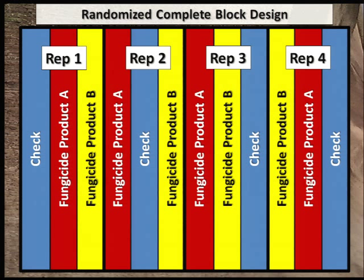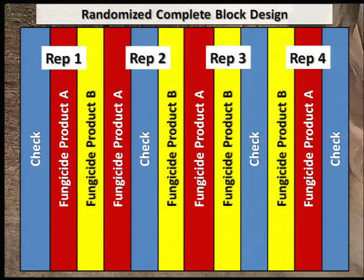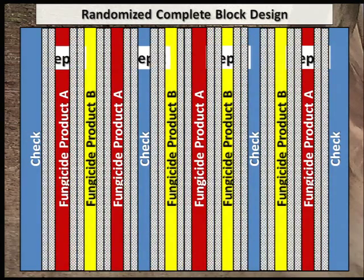Therefore, in variable fields, blocks may not be adjacent, as shown here. The width for each comparison strip depends on your equipment widths. The length of each treatment does not need to go across the whole field — a strip can be half of the field or less. Remember that for some studies, such as nutrient or product studies, you may need buffer strips. Your equipment can apply into the buffer strips, but only the middle portion of each strip will be harvested for comparison purposes.